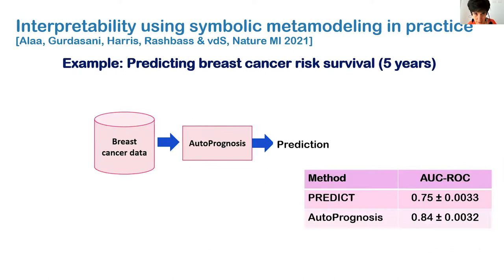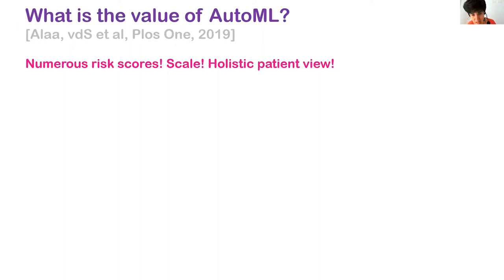In the system Ahmed will present, when AutoPrognosis was initially trained, it was compared with state-of-the-art tools like Predict, focusing only on prediction performance. Since then, the agenda has advanced to develop a variety of methods to understand and interpret these types of predictions. Ahmed will talk more about that.